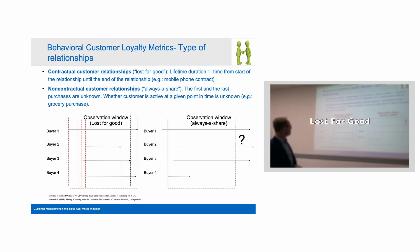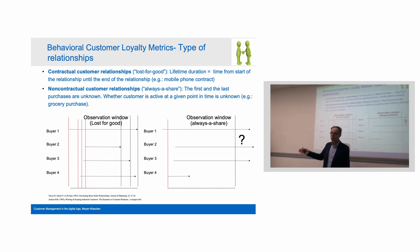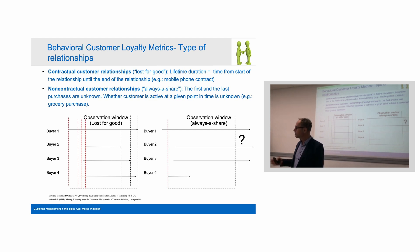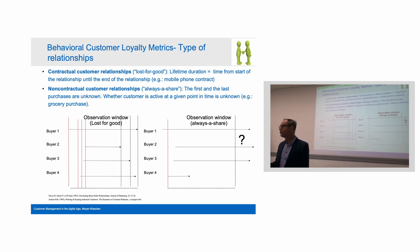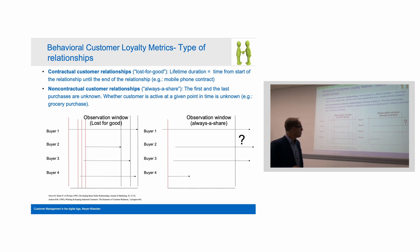In the lost-for-good context, it's a contract, and customers generally switch to another provider because it is more advantageous. For instance, they may switch to get a free mobile phone. Acquisition methods are very aggressive from mobile phone providers — they offer free tablets or phones — so it is often more attractive to not be loyal than to stay loyal.